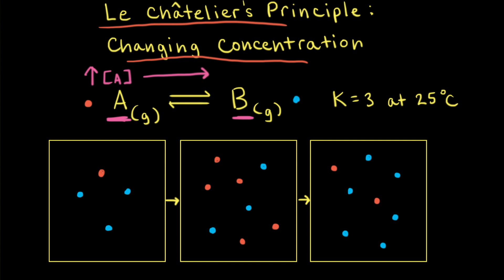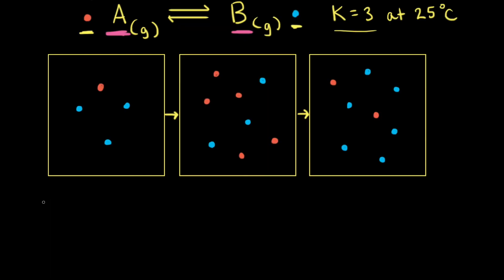Let's use some particulate diagrams to get into the details of how the reaction goes to the right. We're going to symbolize gas A by red particles and gas B by blue particles. For this hypothetical reaction, the equilibrium constant KC is equal to 3 at 25 degrees Celsius. The reaction quotient QC equals the concentration of B to the first power divided by the concentration of A to the first power.